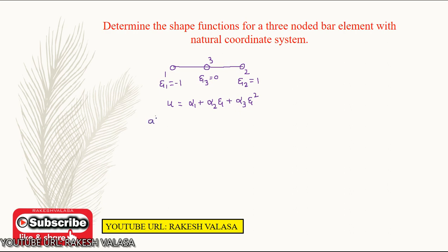At node 1, this is equation number 1. At node 1, zeta 1 equals minus 1. The displacement at node 1 is u1. Substituting zeta equal to minus 1 into equation 1, we get u1 equal to alpha 1 minus alpha 2 plus alpha 3, since (minus 1) squared equals plus 1.